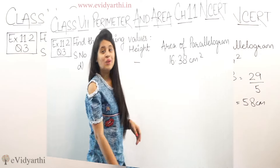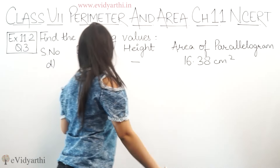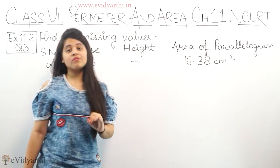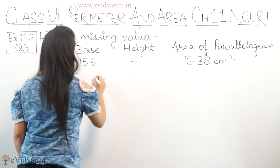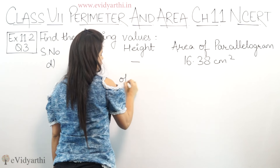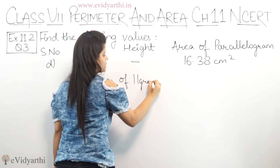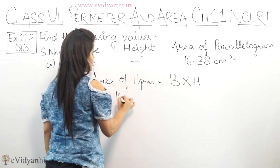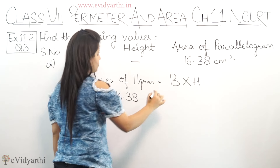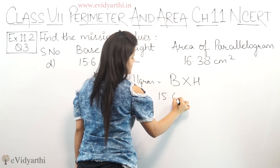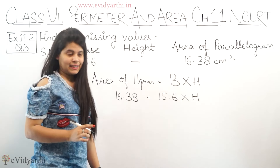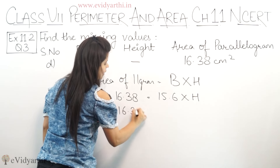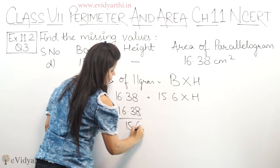Now coming to part D. In part D, base given is 15.6, height is not given, and area of parallelogram given is 16.38. Again we write the formula: area of parallelogram equals to base into height. Area is 16.38, equals to base 15.6, and height we have to find. So again height is being multiplied, so it will divide over. H equals 16.38 upon 15.6.